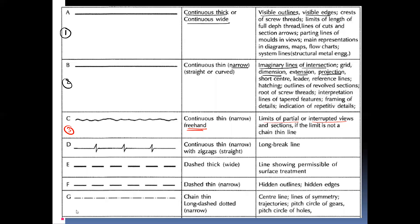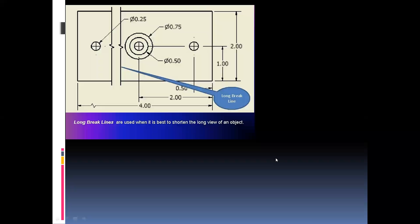The next type of line is the continuous thin zigzag line, which is used for the long break line. What is the meaning of a long break? Suppose we have one component — let us take the foundation of some machine part.